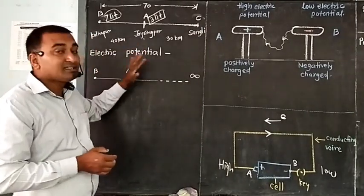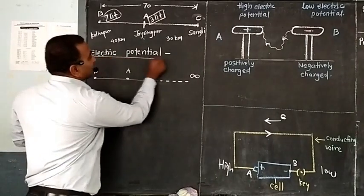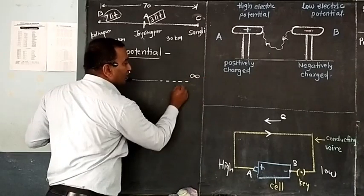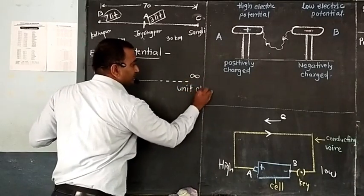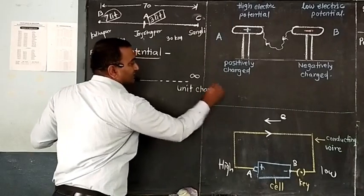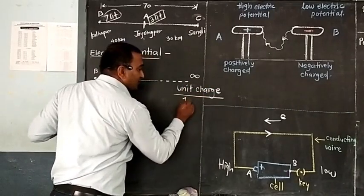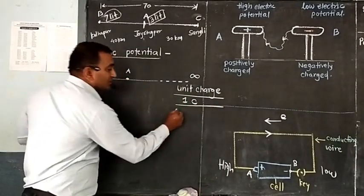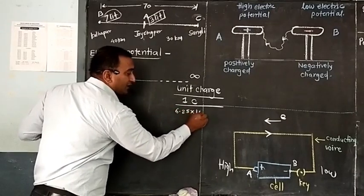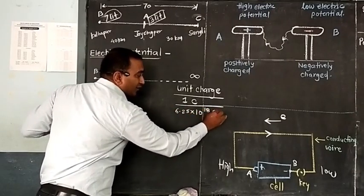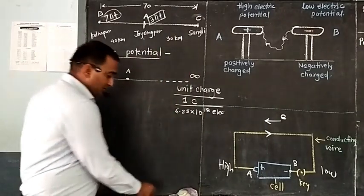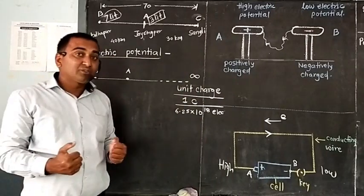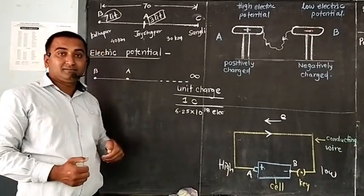Now, consider one more example to understand electric potential. One positive charge, or a unit charge — what is unit charge? Unit charge means 1 Coulomb charge. 1 Coulomb charge means 6.25 × 10^18 electrons. Place this unit charge at infinity. Electrons have negative charge. You want to bring that negative charge particles to point A, then you have to apply force.